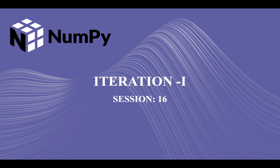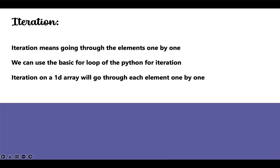Hi guys, welcome back to our course on NumPy. In our last video we covered sorting, and today we are going to learn about iteration. So first of all, what is the meaning of iteration? Iteration means going through the elements one by one. We can use the basic for loop of Python for iteration. Iteration on a 1D array will go through each element or scalar one by one.